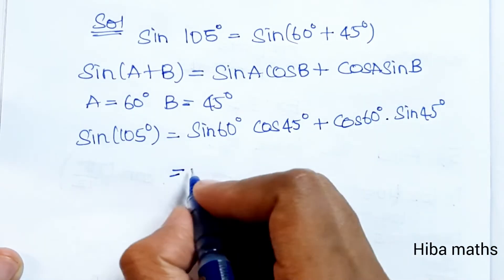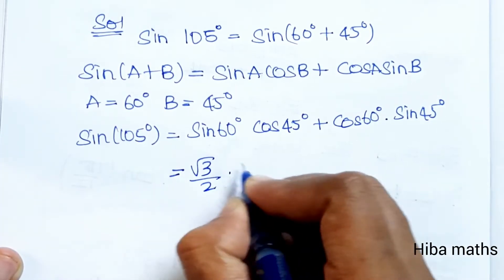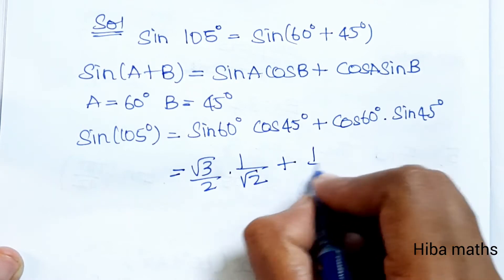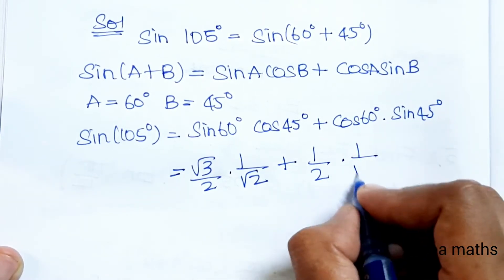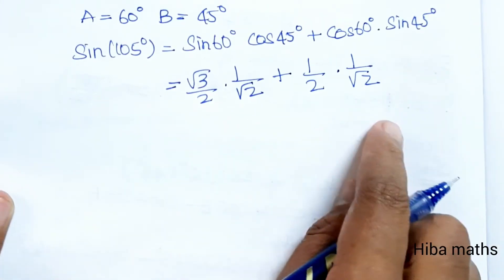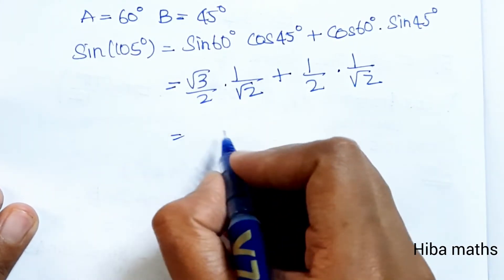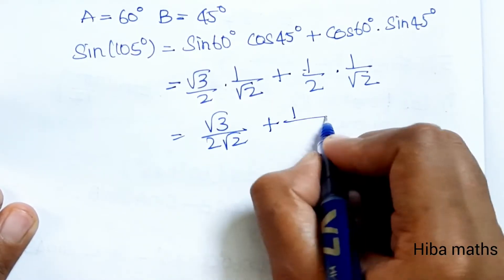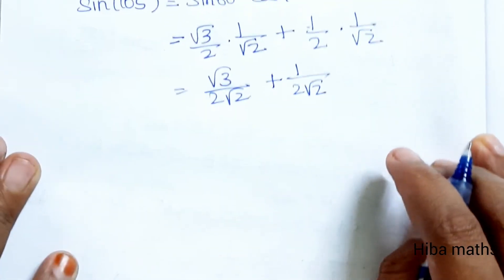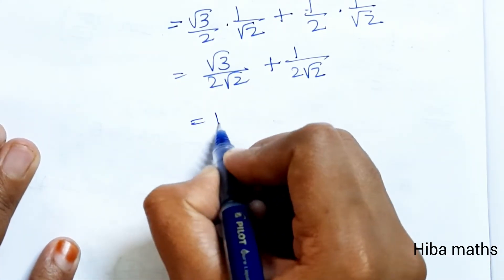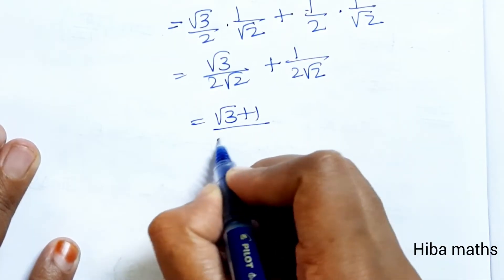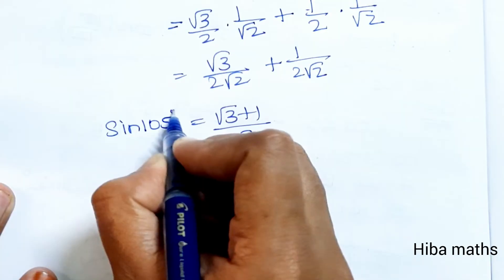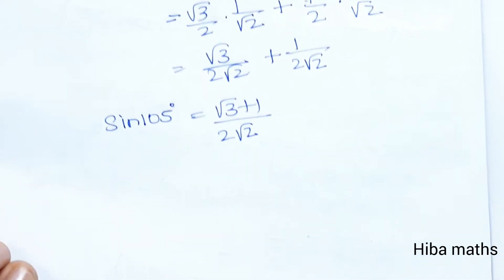sin 105 degree = sin 60 · cos 45 + cos 60 · sin 45 = (√3/2)(1/√2) + (1/2)(1/√2) = √3/(2√2) + 1/(2√2). Since the denominators are the same, we get (√3 + 1)/(2√2).